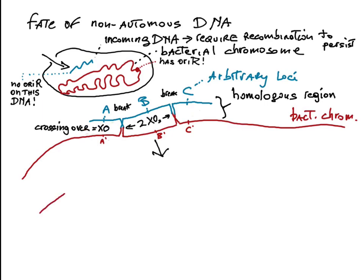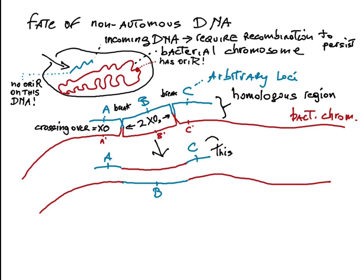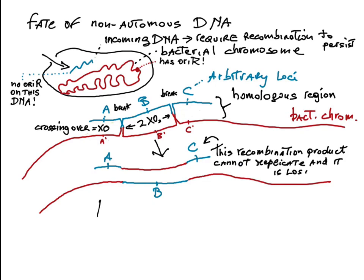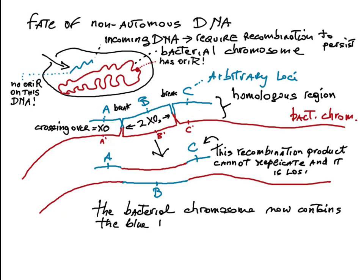The result is the following. First, the smaller recombination product on top cannot replicate and is left behind in subsequent cell divisions. Second, the bacterial chromosome now contains the blue B locus. Third, the blue A and blue C genes are not incorporated in the bacterial chromosome.